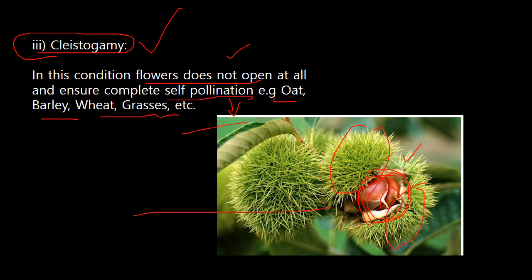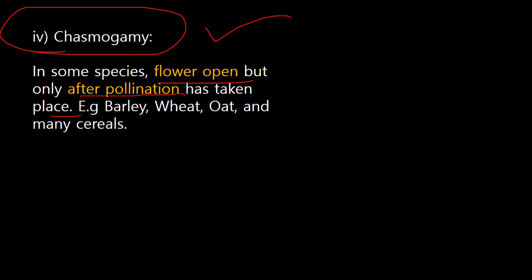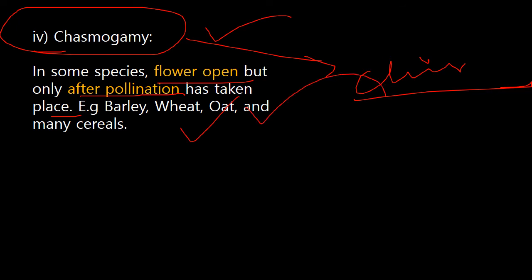This plant shown here is an example of cleistogamy — it is actually chestnut. The next term is chasmogamy. Chasmogamy is when flowers open, but only after pollination has already taken place. This is completely contrasting to cleistogamy, where flowers don't open at all. Chasmogamy is mainly seen in wheat, oats, and many other cereals.